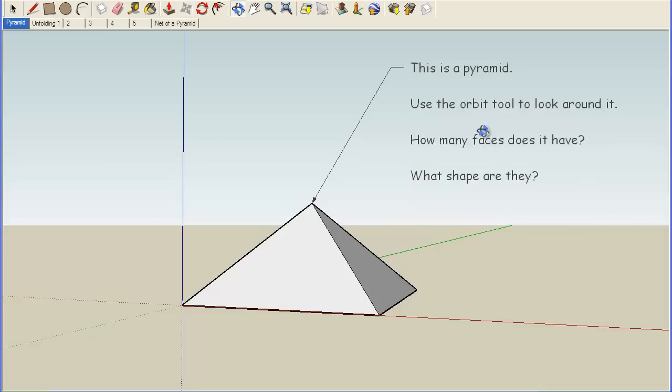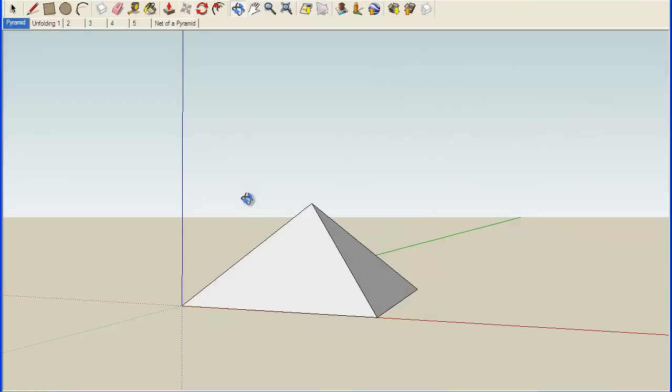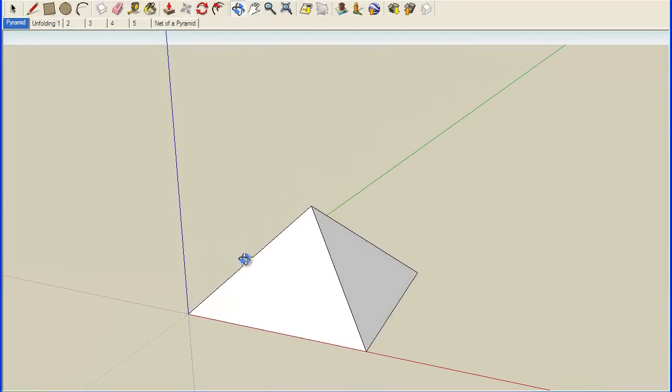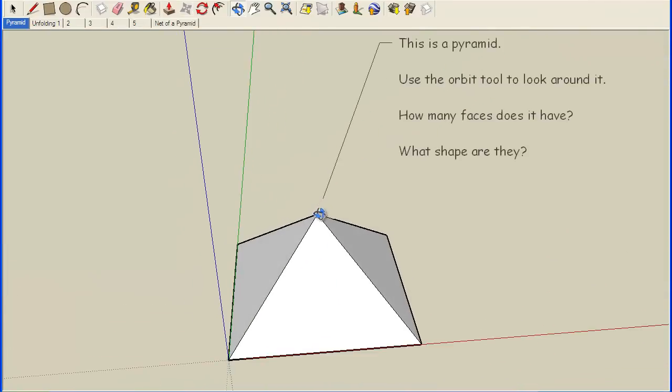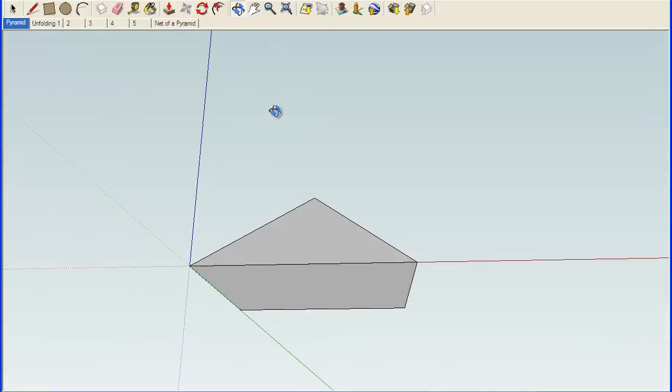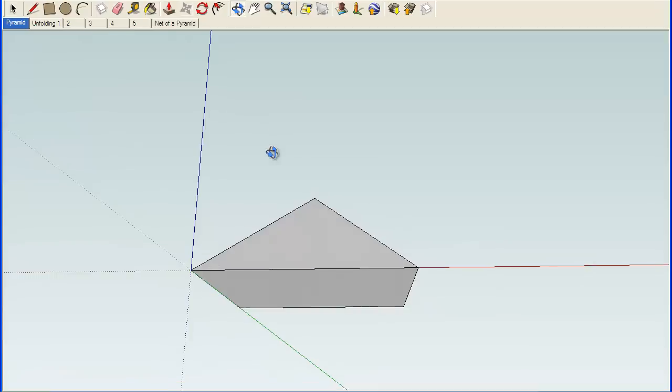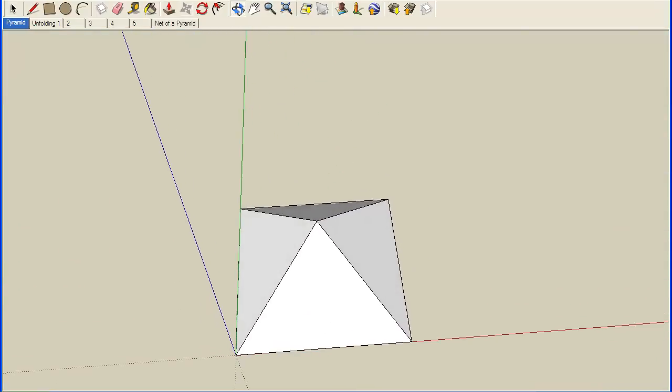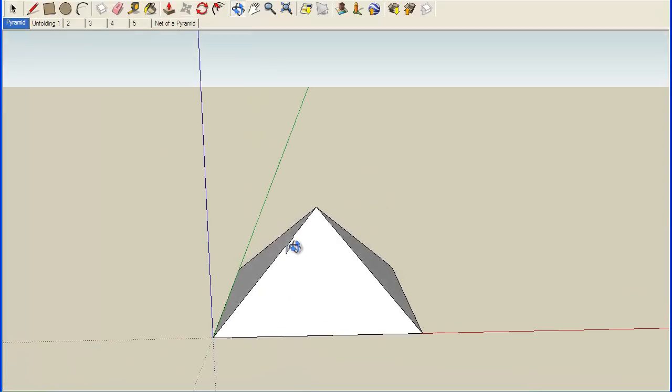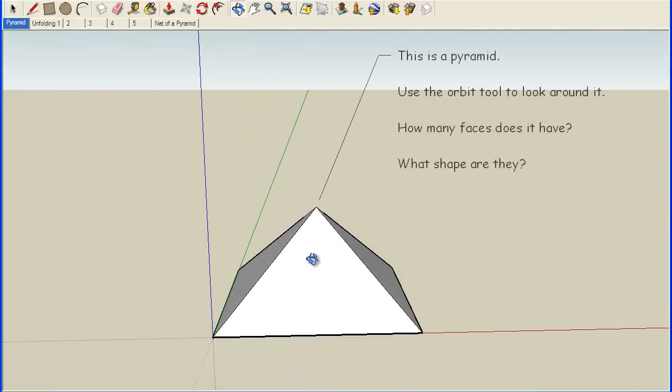Before we look at these pyramids some more, I'd like to just take a moment to orbit around this three-dimensional pyramid that I have. There's our apex where our faces come together. The shape of my base is a square. The apex is directly over the center of my base, so my height would be perpendicular to the base.